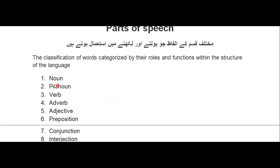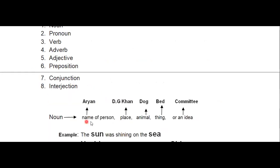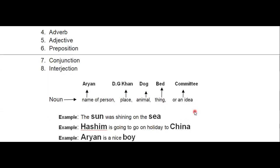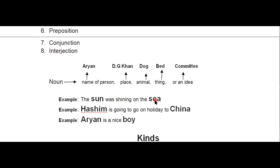Let's start from noun. Noun means name of persons, place, animal, thing, or an idea. Persons mean any person like Aryan, Azam, Zulfiqar, Hashim. Place like DG Khan, Lahore, Faisalabad. Animal like dog, cat, cow. Thing like bed, and idea like committee. Example: 'The sun was shining on the sea' — here sun and sea are nouns.